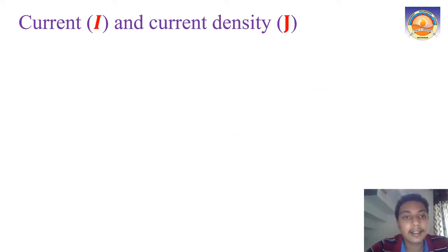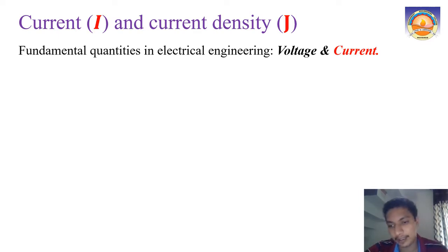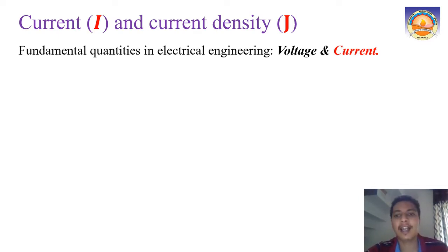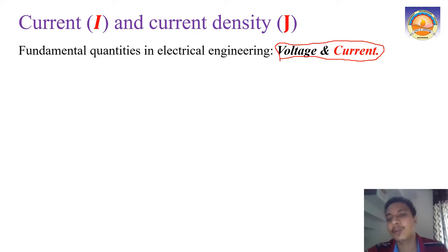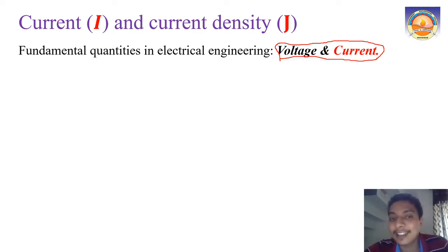While dealing with the first modules on electrostatics, the quantity we knew was voltage. In electrical engineering, the fundamental quantities are always voltage and current - we derive all other quantities based on these two. Voltage or potential difference was already dealt with in the first module. Let us focus on current in this module.